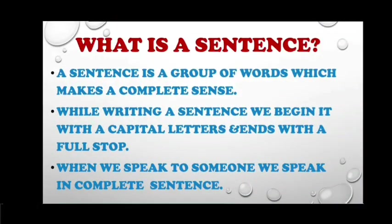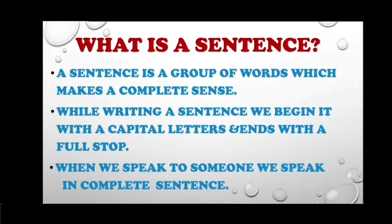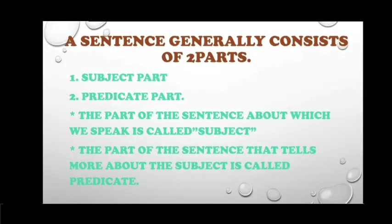First of all, what is a sentence? A sentence is a group of words which makes a complete sense. While writing a sentence, we begin it with a capital letter and it ends with a full stop. When we speak to someone, we speak in complete sentences. A sentence generally consists of two parts: one is the subject part and the second one is the predicate part. The part of the sentence about which we speak is called the subject. The part that tells more about the subject is called the predicate.